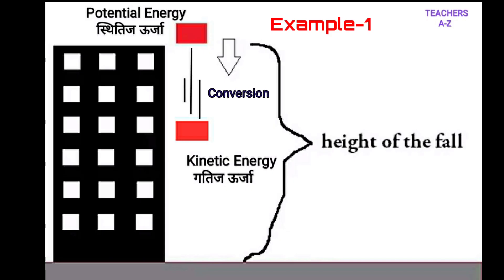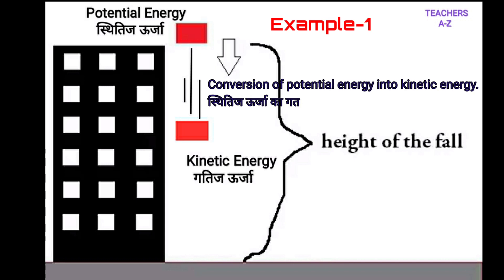Example 1: Conversion of potential energy into kinetic energy — Sthetij Urja ka Gatij Urja mein Parivartit. A stone lying on the roof of a house has potential energy due to its position. When it falls down, potential energy is converted into kinetic energy.